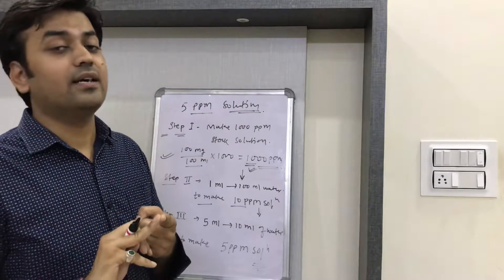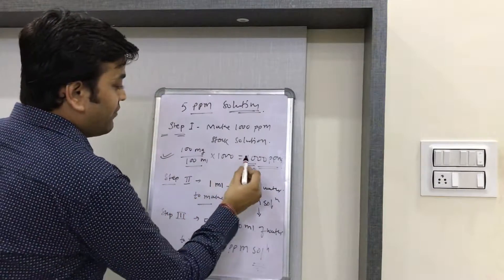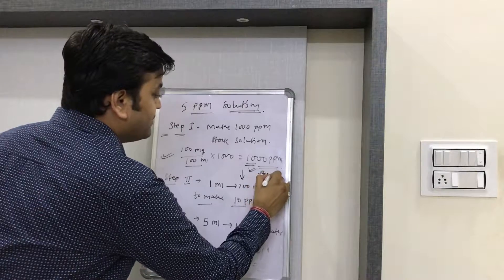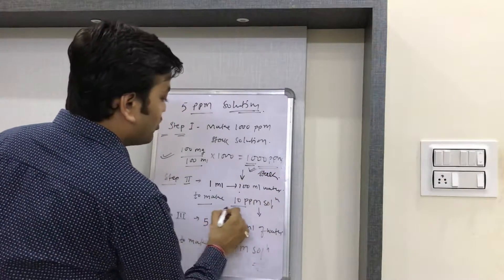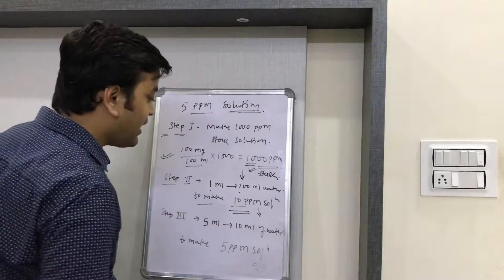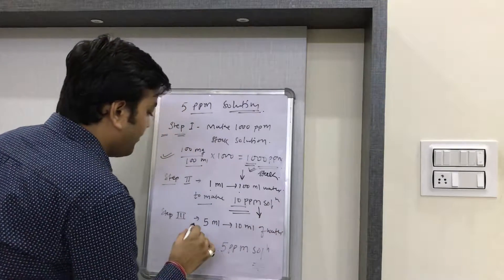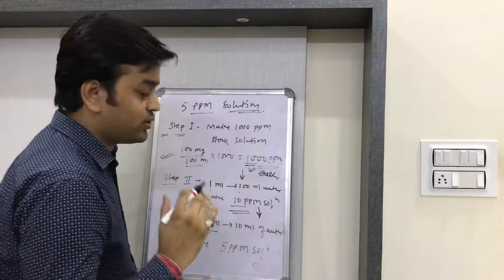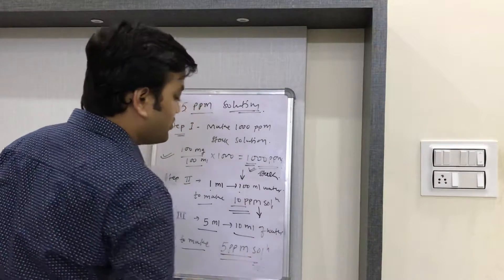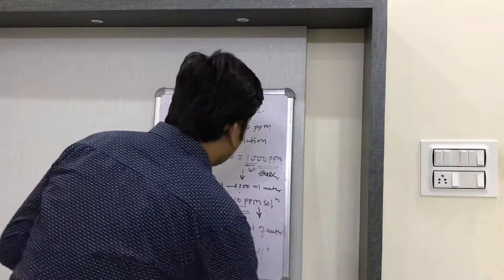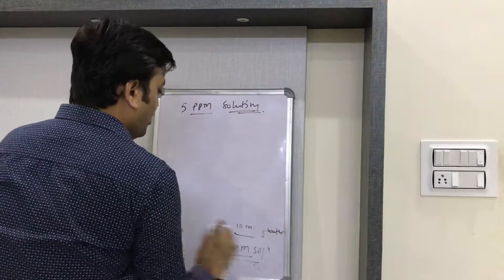So in the third step, we will make the 5 ppm solution. From the stock solution, we take 1 ml in 1000 ml of water to make the 10 ppm solution. Then for further dilution, from this 10 ppm solution we take 5 ml and add it to 10 ml of water to make the 5 ppm solution.